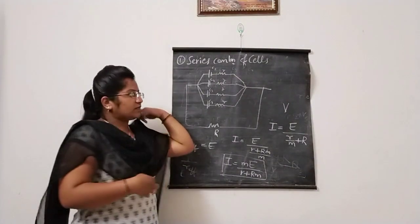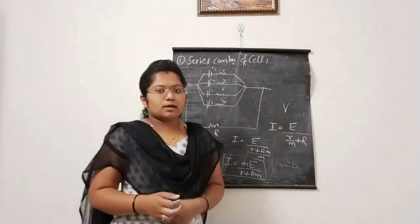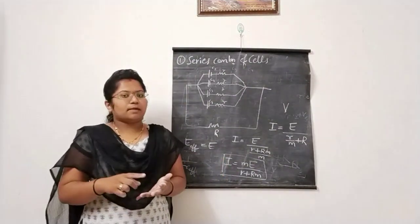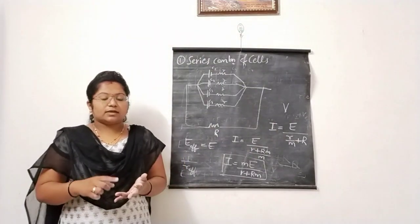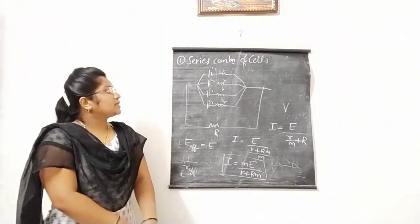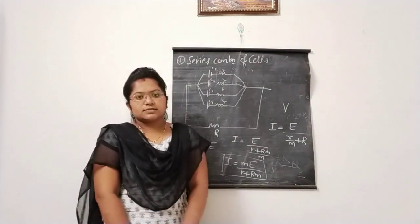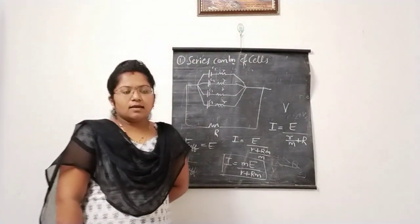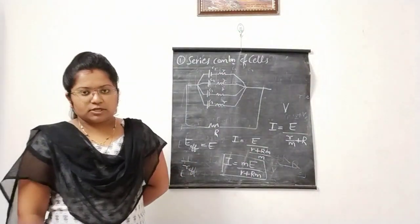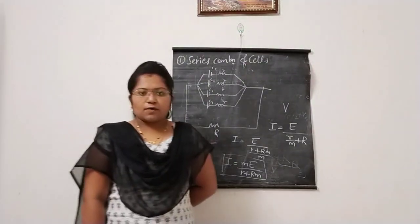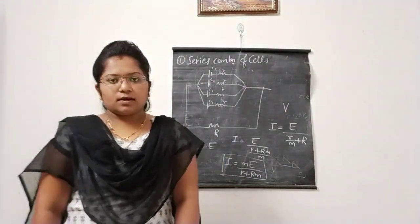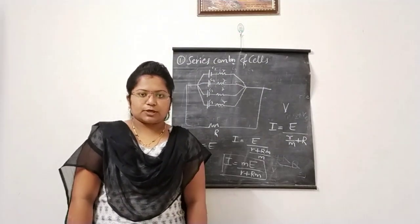So what we studied in today's class: combination of resistors — series and parallel — the equations and expressions for branch currents, then cells, EMF of a cell, internal resistance of a cell, terminal potential difference, and combination of cells. If you have any doubts in all these concepts, you can ask me freely. Thank you.